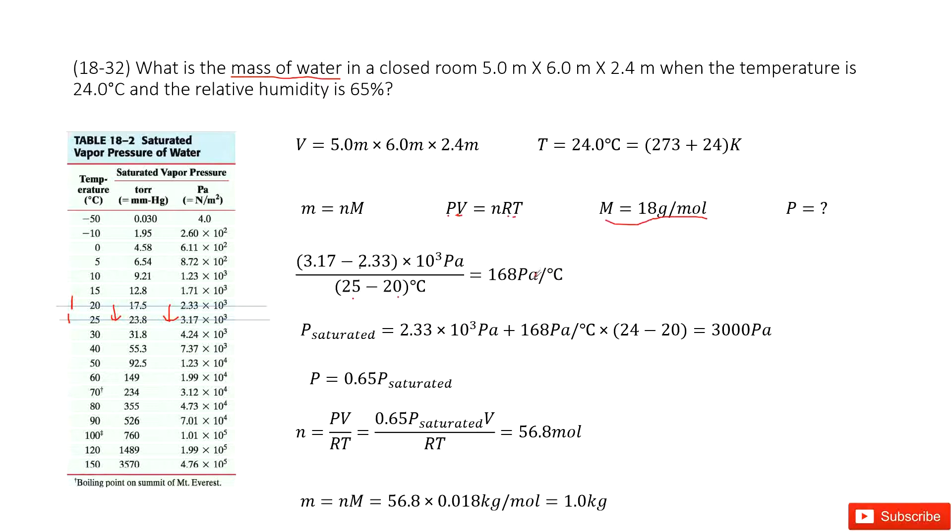Then we get the slope in unit Pa per centigrade. And now we can find the pressure for 24 centigrade for saturated vapor.